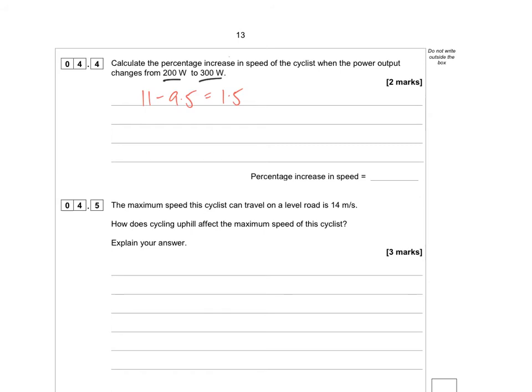Your task is to find the percentage increase in speed. So it started at 9.5 metres per second and it increased by 1.5 metres per second. So if you do 1.5 over 9.5 and then turn it into a percentage, so multiply by 100, that then gives you an answer of 15.8% increase.